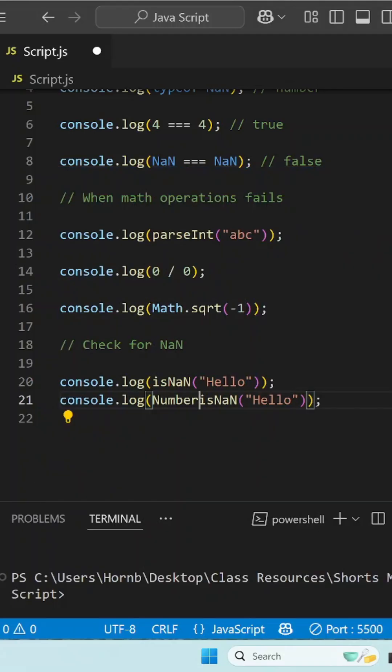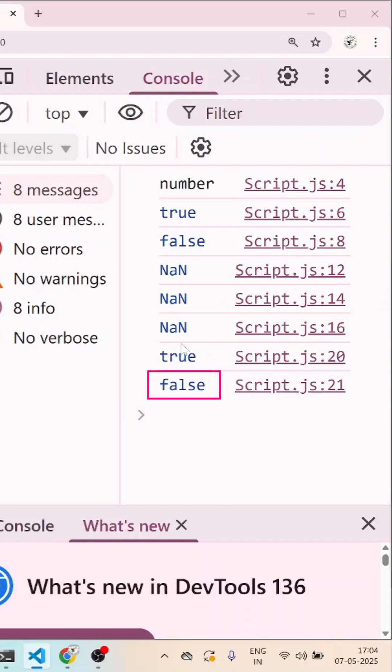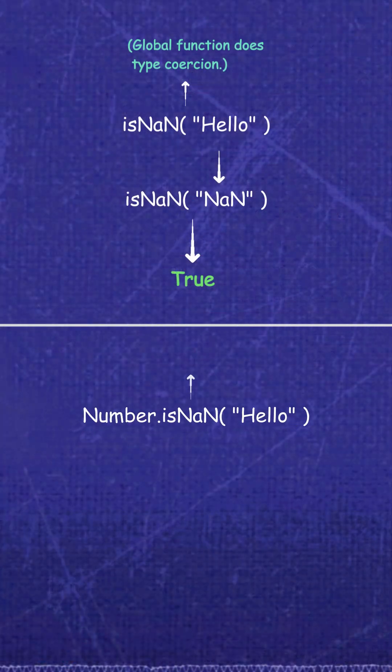In the case of Number.isNaN, it does not convert the value. Rather, it checks if the value is exactly NaN. Since hello is a string and not actually NaN, therefore the result is false.